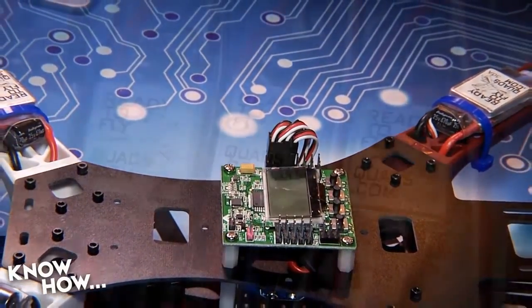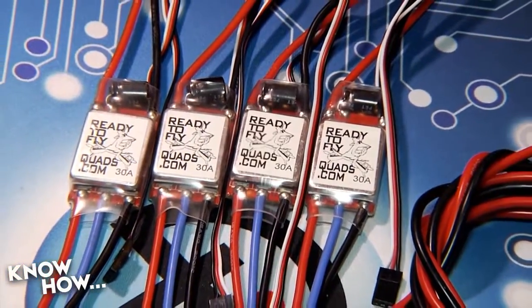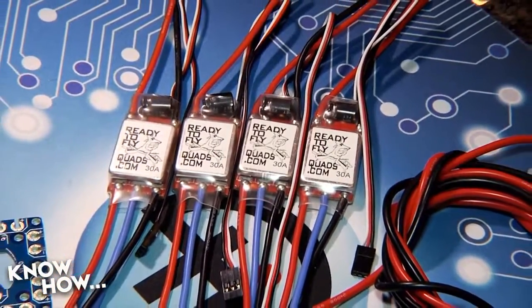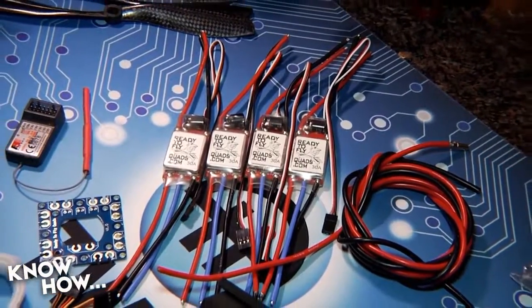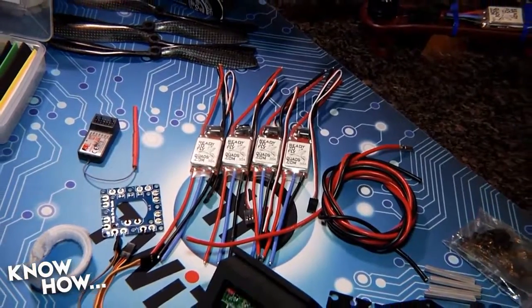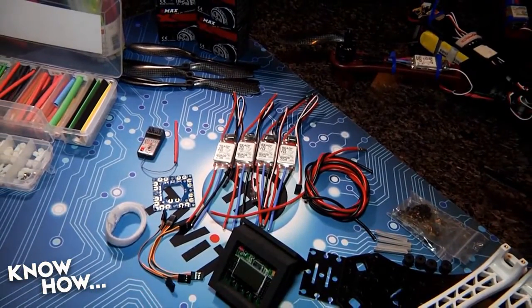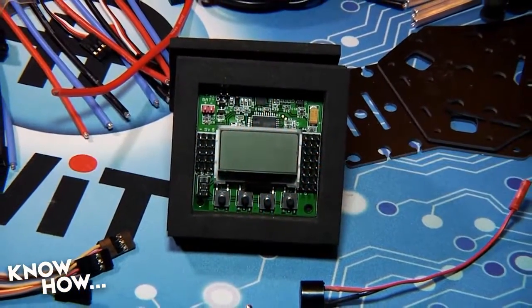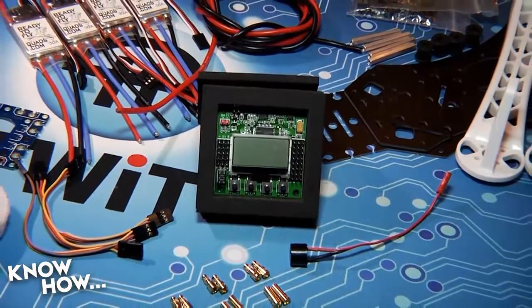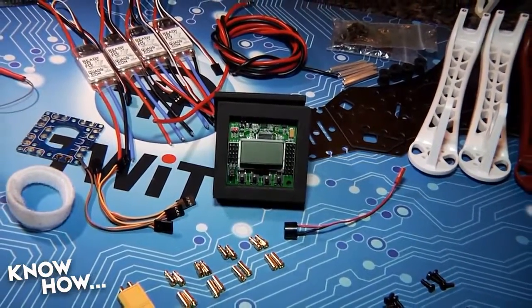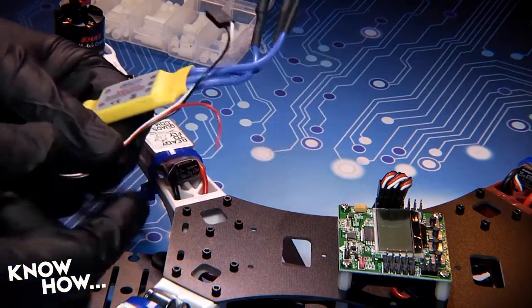Most non-opto type ESCs include a battery eliminator circuit or BEC that provides 5 or 6 volt power to the flight controller and the receiver from the main battery, but they can fry electronics if incorrectly connected. Check and double check your connections before you apply power. Also, while the KK and many other flight controllers like it will only accept power from the first ESC, some flight controllers will fry if you connect them to more than one BEC equipped ESC. If you're using such a flight controller, snip the red center wire on the ESCs other than the first.